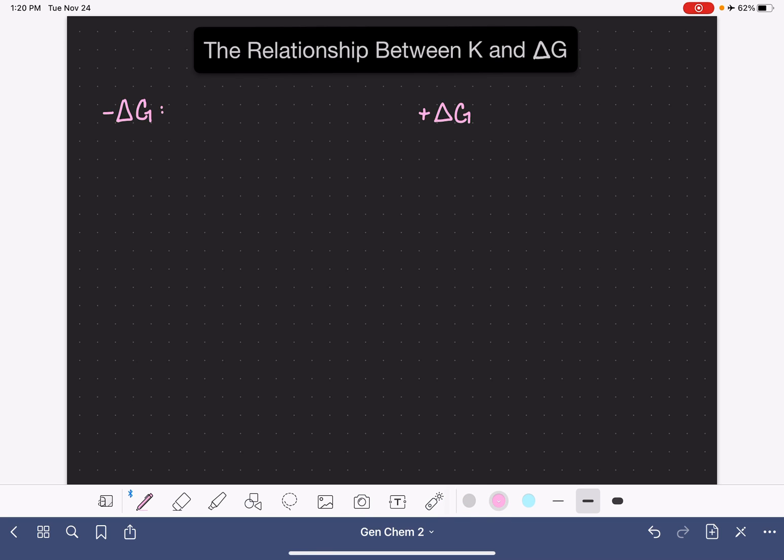As we know, when we have a negative value for delta G, this means that our reaction or our process is spontaneous, which means that it occurs all on its own without any input of additional energy or any sort of manipulation.